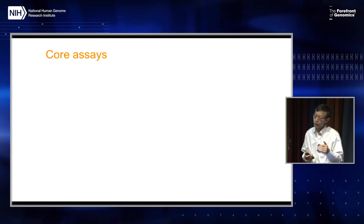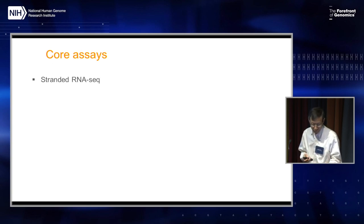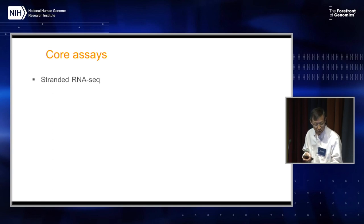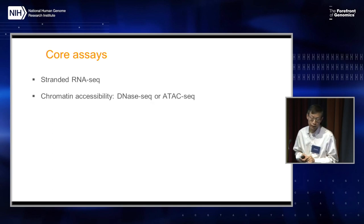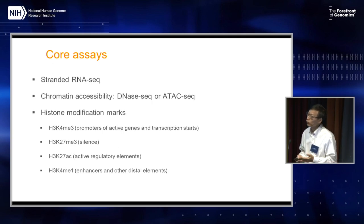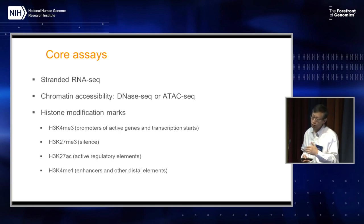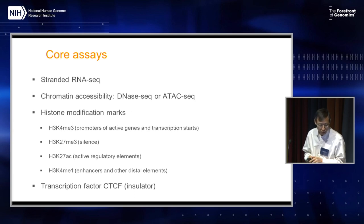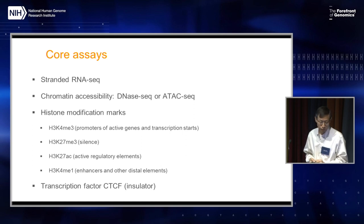For the FAANG community, we provide those essential core assays. RNA-seq is very, very important as a kind of phenotype survey — a major phenotype readout. Then chromatin accessibility, using either ATAC-seq or DNase-seq. This includes a full set of histone modification marks that can be used to identify enhancers, promoters, or silencers. For example, H3K4me3 and H3K27ac indicate active promoters; H3K27ac and H3K4me1 indicate enhancers. CTCF, a transcription factor, can be used to identify insulators.